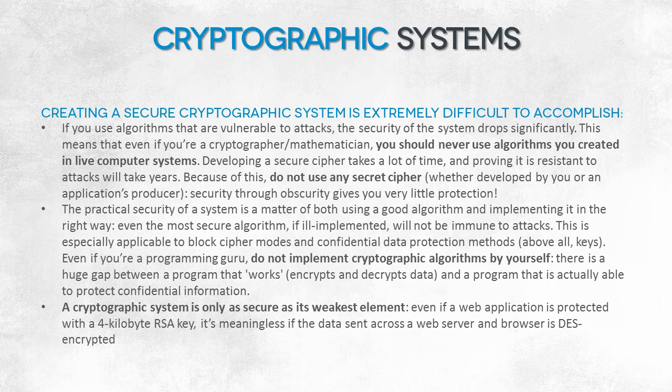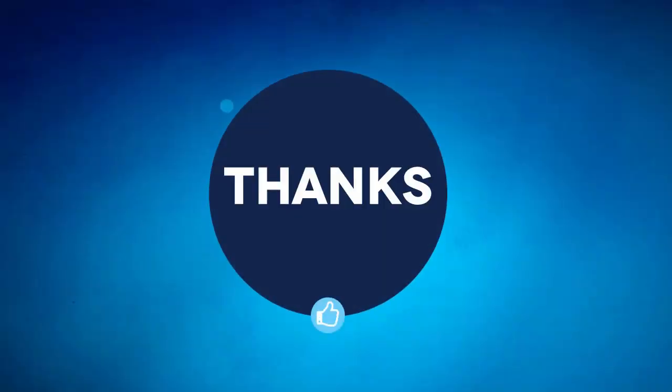System vendors often try to obscure this by claiming, for example, that their solution guarantees total security because connection to some bank service requires using a 4-kilobyte RSA key. What they hide is that the 4-kilobyte key is then used to encrypt a 56-bit DES key, and that the following transmission — which is symmetric since a hybrid scheme is used — proceeds with the weak and vulnerable DES algorithm. A potential attacker will not try to crack the 4-kilobyte RSA key; they will directly target the DES encryption. Thank you for your attention.